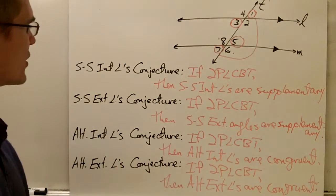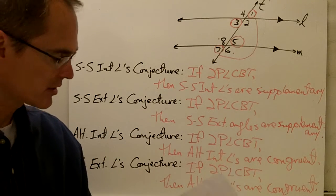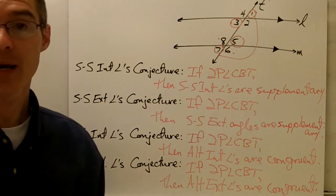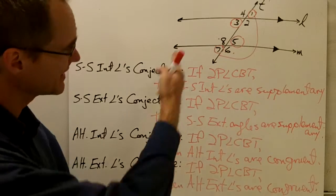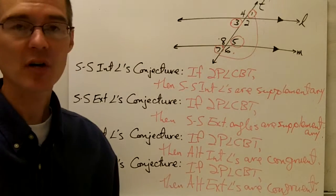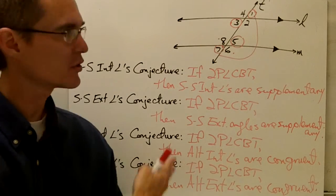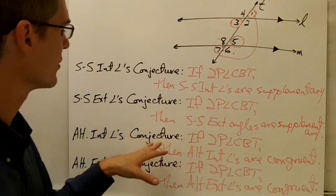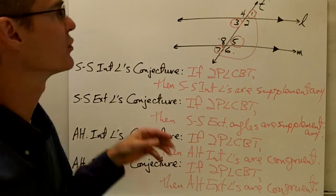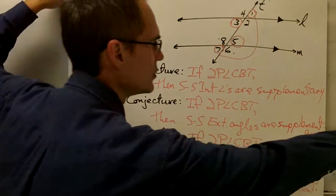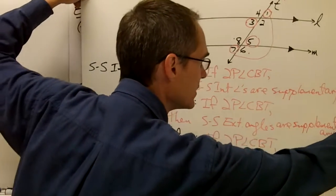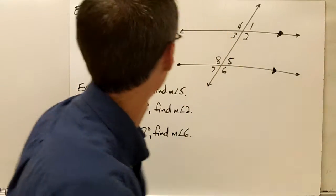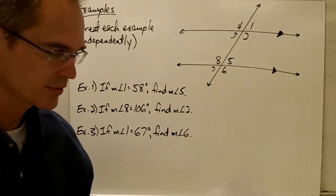So now I have all these conjectures about these different angle pairs. I haven't proven them yet, but based on my explorations, the diagrams, and what I know about these angles, I think these statements are probably true. So I'm going to use those statements in these examples.